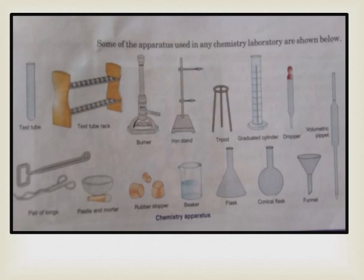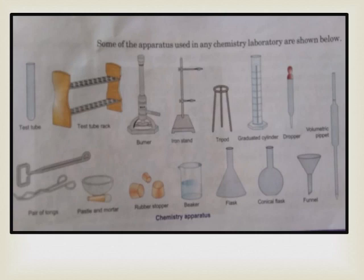A volumetric pipette and a funnel are used to pour liquids. A conical flask and a round bottom flask are shown. A beaker is used to hold chemicals or other substances. A rubber stopper closes the mouth of flasks. Pestle and mortar are used for grinding — powdery substances react more easily than solid ones. Tongs are used to hold hot objects so we don't get burned.